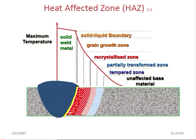Heat affected zone: considering maximum temperature, the first zone is solid weld metal. Moving outward: solid-liquid boundary, grain growth zone, recrystallization zone, partially transformed zone, tempered zone, and unaffected base material. These are five to six stages where the material has changed in different conditions due to the welding heat.